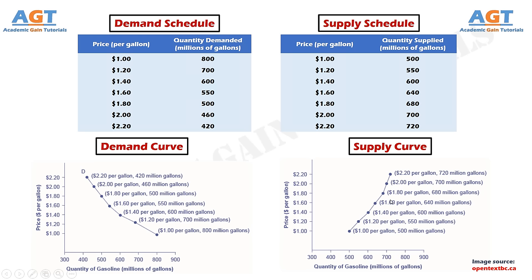As the price rises, say from $1 per gallon to $2.20 per gallon, the quantity supplied increases from 500 gallons to 720 gallons. Conversely, as the price falls, the quantity supplied decreases.